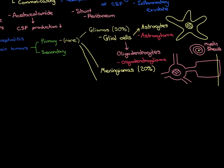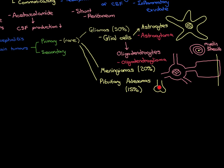The third most common type of primary brain tumour after meningiomas is pituitary adenomas, accounting for 15% of primary brain tumours. This is a tumour within the cranial cavity originating from the hormone-secreting cells of the anterior pituitary. The pituitary gland consists of the anterior pituitary and posterior pituitary. The anterior pituitary has circular cells responsible for secreting hormones into the bloodstream, under the control of hypothalamic neurons up in the hypothalamus.